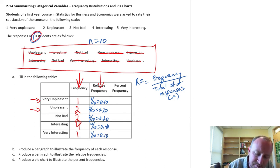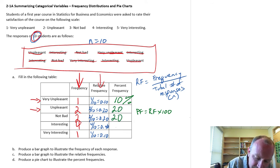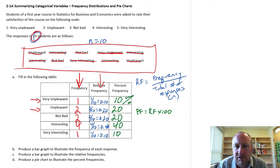The percent frequency is relative frequency times 100, so we can refer to it as a percentage. This means 10% of the students found it to be very unpleasant, 20% found it to be unpleasant, same for not bad, 40% found it to be interesting, and 10% found it to be very interesting. We're breaking it down, having different ways that we can explain this data. What we want to do now is produce that graphical representation.